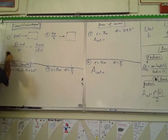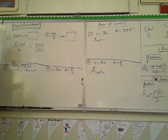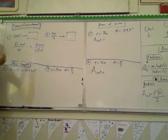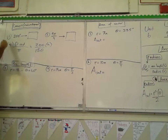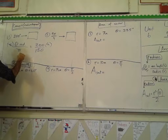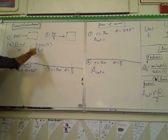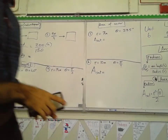To find theta, the radian measure, you can multiply both sides by π — you don't even need to cross-multiply because you'd do that step anyway. So theta equals 200 over 180 times π, which simplifies to 10 over 9 times π, giving us 10π/9.